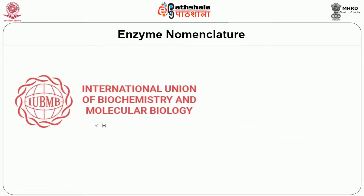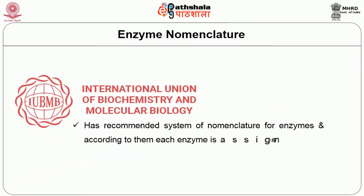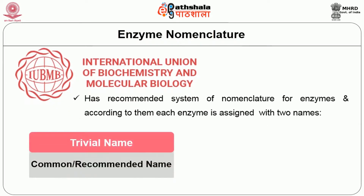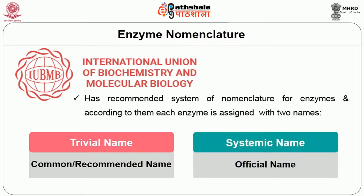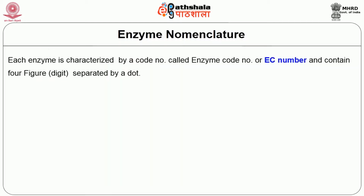Now let us understand enzyme nomenclature. IUBMB has recommended a system of nomenclature for enzymes. According to this system, each enzyme is assigned two names: a trivial name, which is the common or recommended name, and a systematic name, which is the official name of the enzyme.